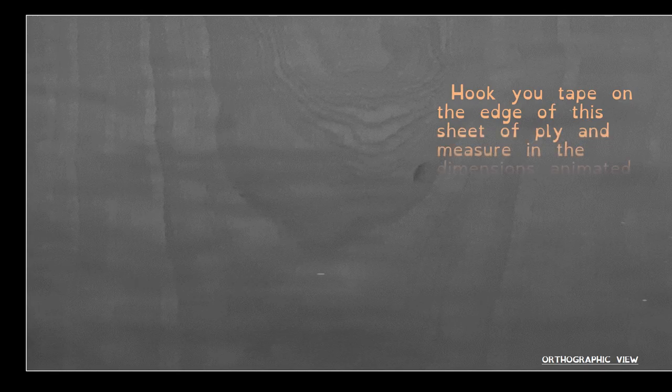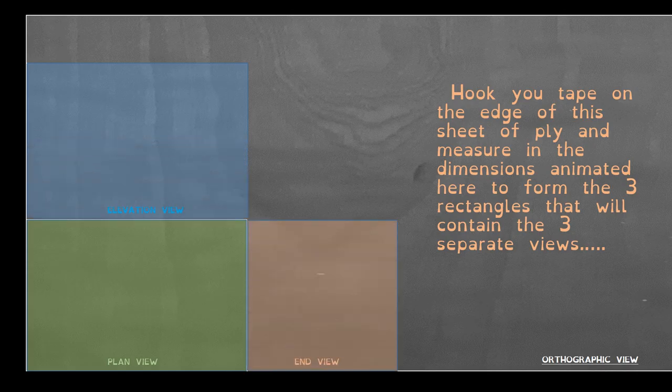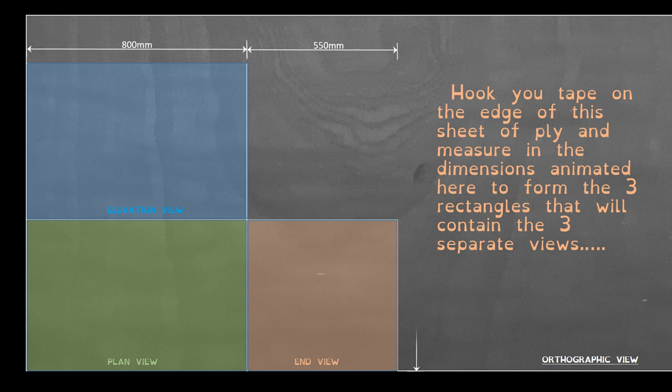Hook your tape on the left side and measure 800mm, then continue to measure a further 550mm. From the bottom edge measure up 500mm wide, then continue on and add another 550mm wide. You will end up with those 3 rectangles: one is the elevation view, one is the plan view, and one is the end view.